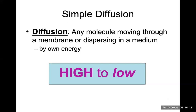Simple diffusion is any molecule moving through a membrane or dispersing in a medium by its own energy. This happens passively — the molecule will move from an area where it's highly concentrated to an area of low concentration, automatically. One example is spraying a little bit of perfume in the air. Eventually those molecules would disperse by simple diffusion to the rest of the room, so everyone in the room could smell it.